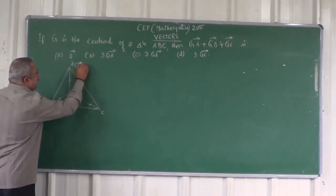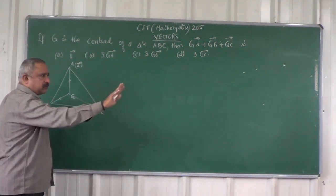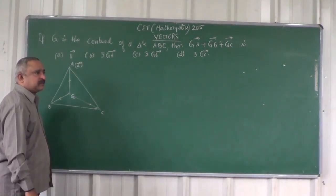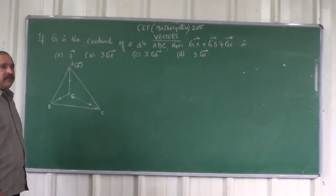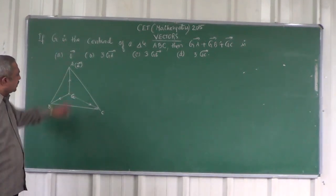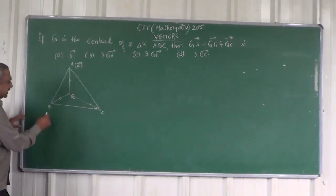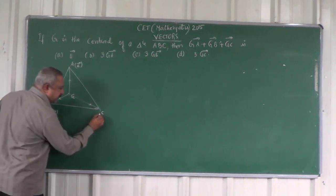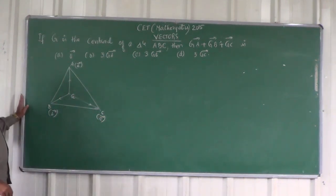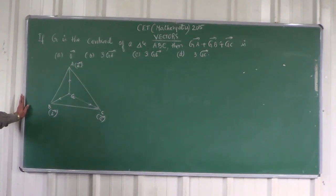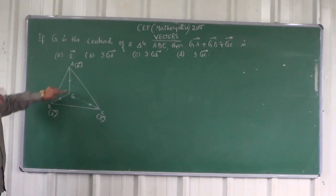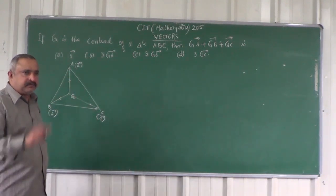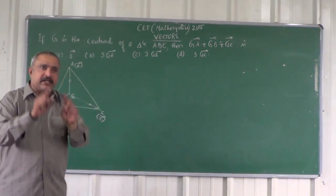If vector A is the position vector of vertex A, vector B is the position vector of vertex B, and vector C is the position vector of vertex C — these are the position vectors of the vertices of the triangle.